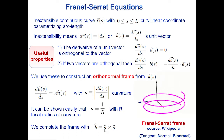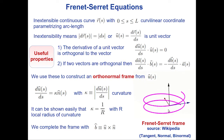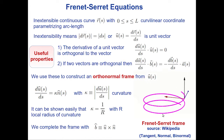This animation from Wikipedia shows the triad — tangent, normal, and binormal — for a specific curve, in this example a helix. The tangent is the blue vector, the normal is the red vector, and the binormal perpendicular to both is the black vector.